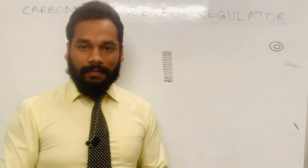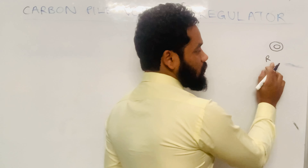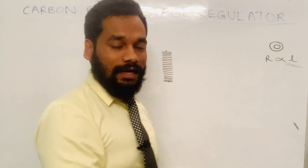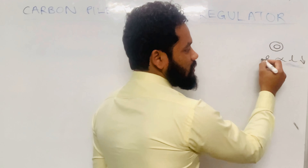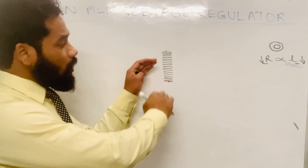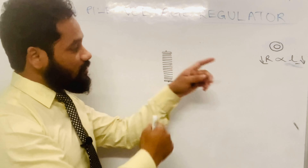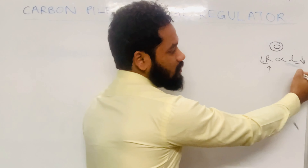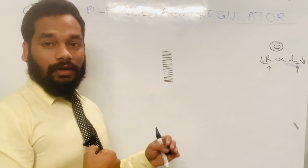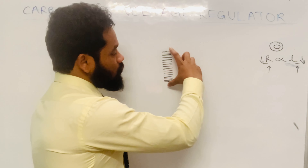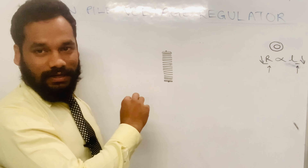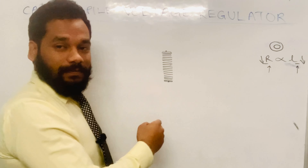If there is more pressure on this pile, its length will decrease. When length decreases, resistance also decreases, because resistance R is directly proportional to length. When there is less pressure on this pile, the length will be more, and when length is more, resistance will also be more. So: if pressure is more, resistance decreases; if pressure is less, resistance is more.